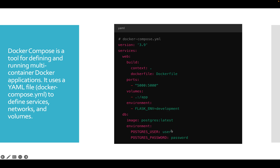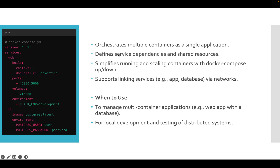Docker Compose defines a runtime setup and orchestrates multiple containers. Using Docker Compose we can run the same Docker image 10, 20, or 30 times. We can define services, dependencies, and shared resources, and simplify running and scaling containers with docker compose up or down. It also supports linking services and creating networks. Docker Compose is used when running multi-container applications, for local development and testing, or for creating a distributed system.